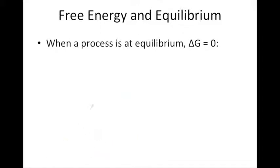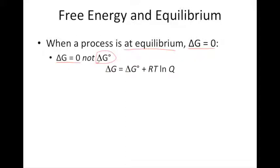We also know that when a chemical reaction or physical change is at equilibrium, our ΔG value is equal to zero — not ΔG standard, but ΔG. So in this equation, if this reaction is at equilibrium, then ΔG is equal to zero, and we can rewrite the equation as shown.